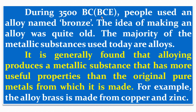During 3500 BC, people used an alloy named bronze. The idea of making alloys is quite old. The majority of metallic substances used today are alloys — for example, stainless steel, brass, and bronze. It is generally found that alloys produce metallic substances with more useful properties than the original pure metals from which they are made. For example, brass is an alloy of copper and zinc, and it has a more metallic appearance than copper and zinc alone.